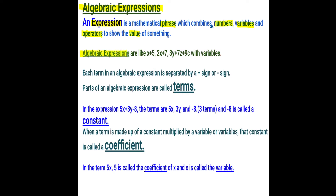Algebraic expressions are like x plus 5. Another example is 2x plus 7. And another example is 3y plus 7z plus 9z. So algebraic expressions are expressions with variables.